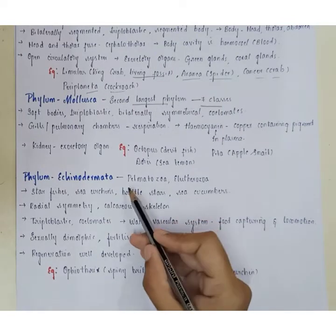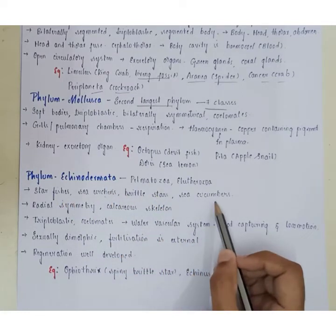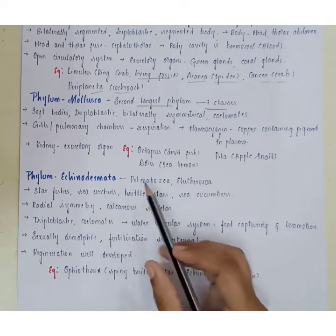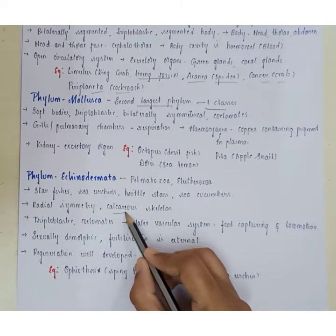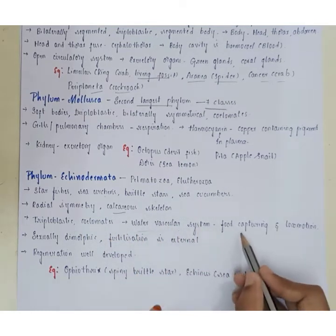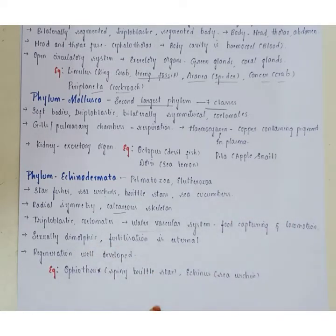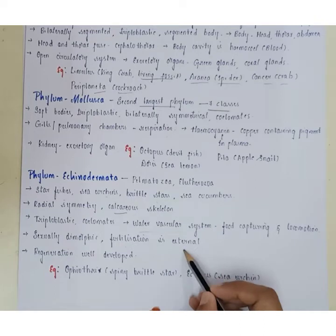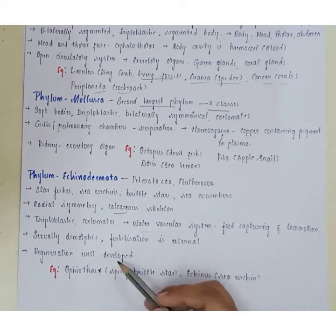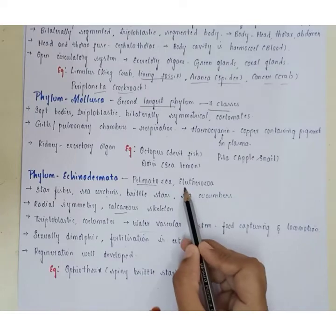Phylum Echinodermata includes starfishes, sea urchins, brittle stars, and sea cucumbers. The body has radial symmetry, a calcareous skeleton, and they are triploblastic coelomates. They possess a water vascular system used for food capture and locomotion. They are sexually dimorphic with external fertilization, and regeneration is well developed. Examples include Ophiotrex (spiny brittle star) and Echinus (sea urchin). Further classified into Pelmatozoa and Eleutherozoa.